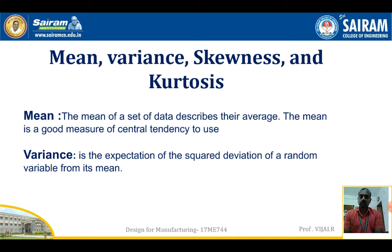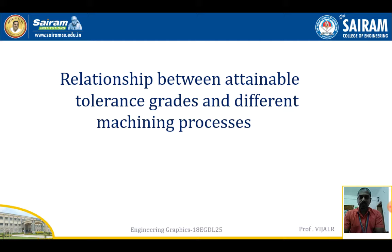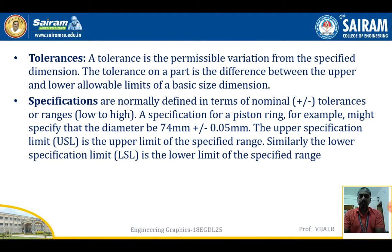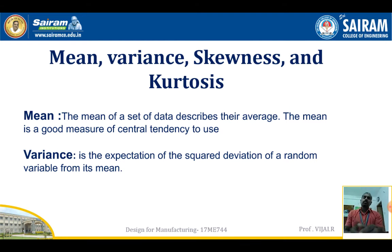Mean is the average — it describes the average of a set of data. The mean is a good measure of central tendency. For example, if I am producing a component of 10 ± 0.2, that is the tolerance. The upper limit is 10.2 and the lower limit is 9.8. Similarly, a specification like 74.5 ± 0.5 gives lower and upper limits to check whether components are coming within the process or not. The average of the set of readings will give you the mean.